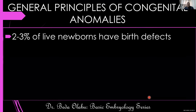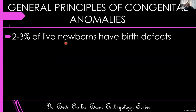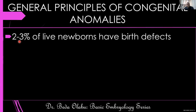Birth defects are not as rare as you may want to think. I consider 2–3% really common. And that 2–3% only applies to live newborns. If you consider the abortuses — children who have been aborted for whatever reason — the percentage would actually increase, because some of these abortions occur because of birth defects. The percentage is slightly higher in abortions, maybe intermediate in stillbirths, but in live births, 2–3%.